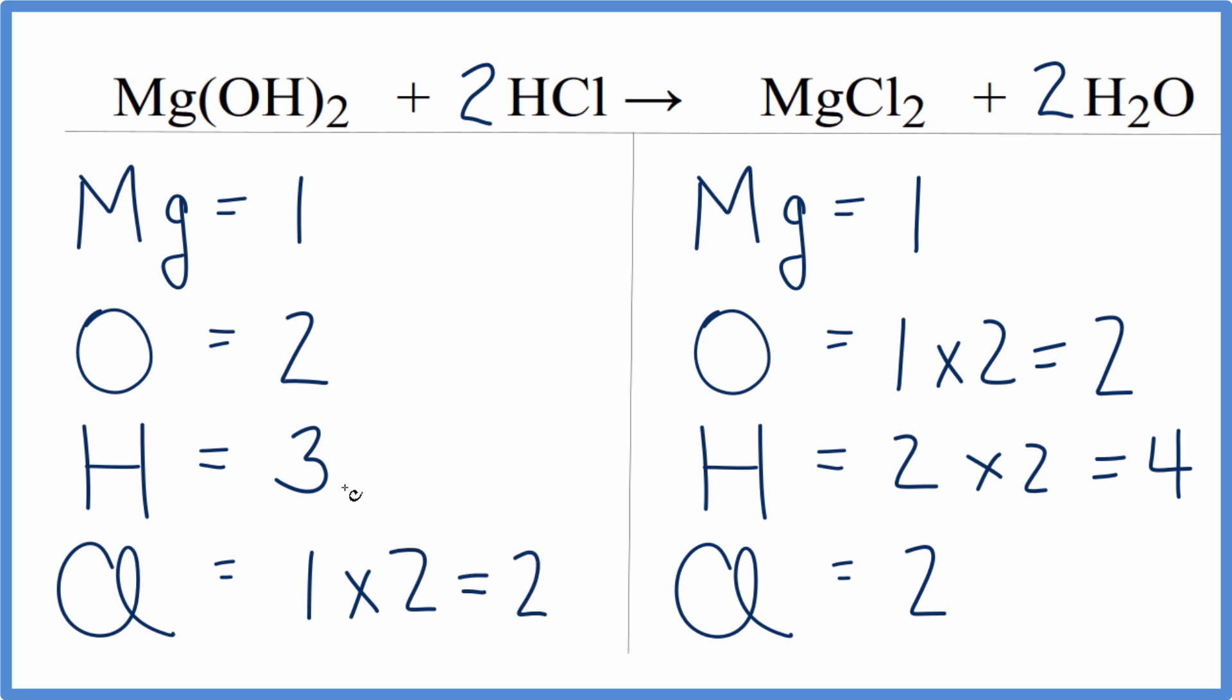Now we need to update our hydrogen atoms. We have 2 times 1, which is 2 hydrogen atoms here, plus 1 times 2, which is 2 more. 2 plus 2 gives us 4, and that balances the hydrogen atoms.